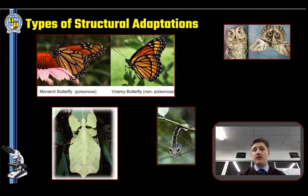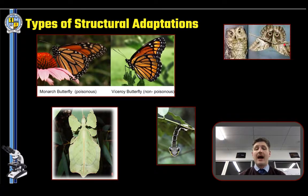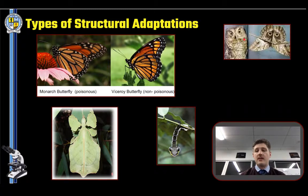Here we have an owl and a moth. This moth has developed a pattern on its back that looks like an owl, so when an owl sees the moth landing on a tree it doesn't think it's prey — it thinks it's another owl. That's fascinating. How did a moth come to look exactly like another organism? That's all about inheritance, the passing of genetic material, and natural selection — a fascinating topic.